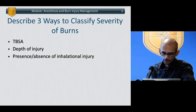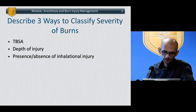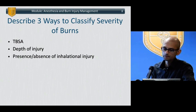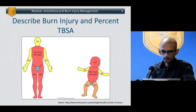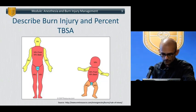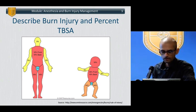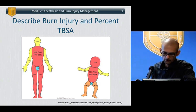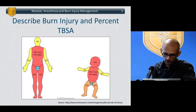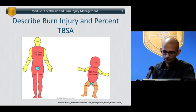First of all, in terms of classifying burns, you can classify them according to total body surface area, depth of injury, and the presence or absence of inhalational injury. In terms of total body surface area, the rule of nines ascribes about 9% of surface area to various parts of the body: 9% for each of the upper extremities, 18% for each of the lower extremities, 18% for the front and back of the torso, and 9% for the face.